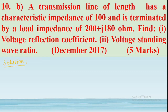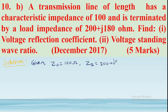This is the example from December 2017 on transmission lines. Coming to the solution — given that the characteristic impedance Z0 is equal to 100 ohms, and load impedance ZR is equal to 200 plus j180 ohms. We need to determine the voltage reflection coefficient K and the standing wave ratio S.